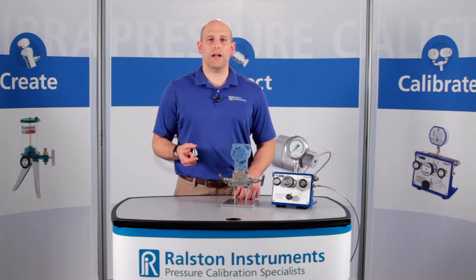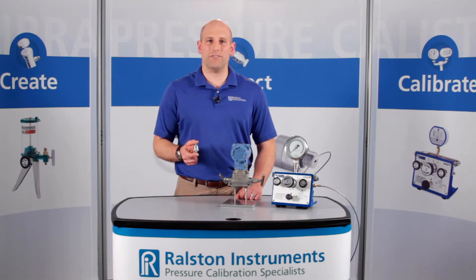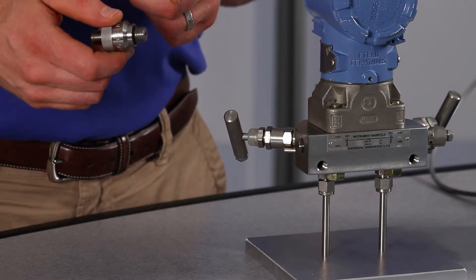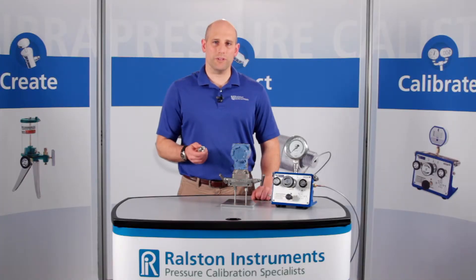This adapter allows you to quickly create a bubble tight seal on any female NPT pressure port without the need for thread sealant or a wrench. Just thread the male NPT side into a female NPT port until it is snug but only finger tight.